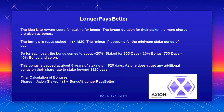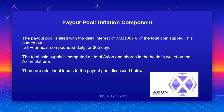Longer pays better: the idea is to reward users for staking longer. The longer the duration of a stake, the more shares are given as a bonus. The formula is: days staked × (1/1820) − 1, which accounts for a minimum stake period of one day. For each year: 365 days = ~20% bonus, 730 days = ~40% bonus, and so on. This bonus is capped at approximately 5 years, or 1820 days. Final calculation: shares = Axion staked × (1 + bonus %).